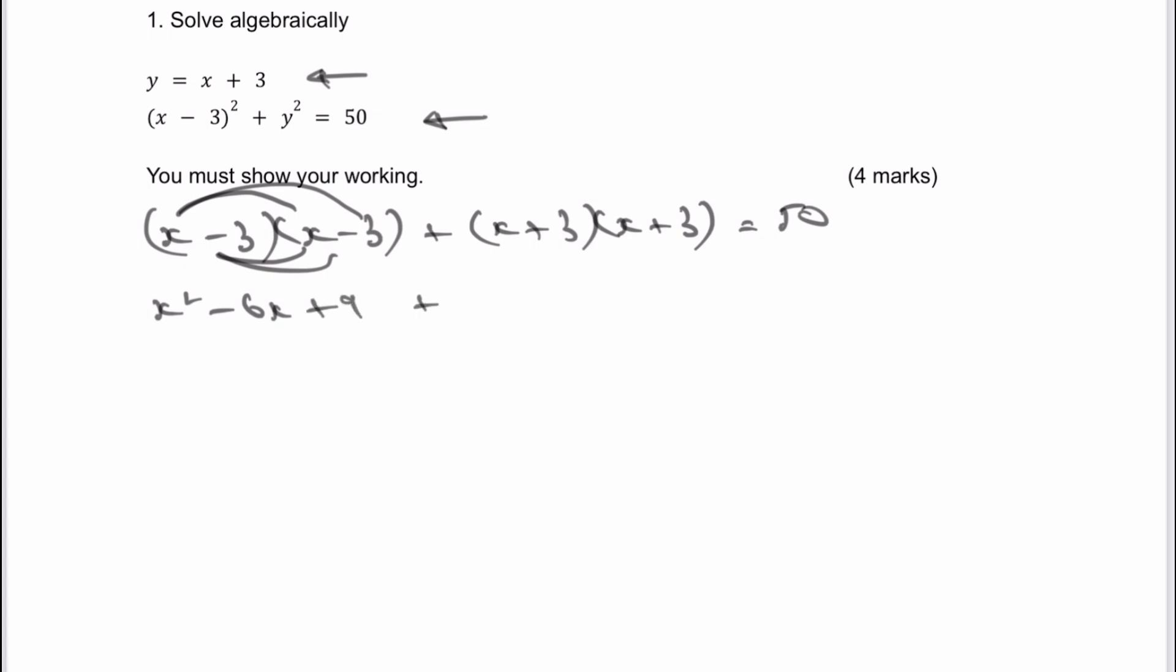And then I do exactly the same for the second two terms. So I'm going to get x squared, in this case then, plus 6x plus 9, and that all equals 50.